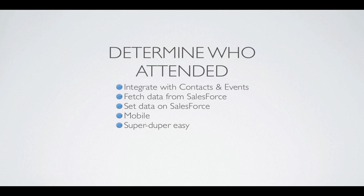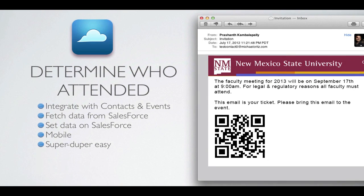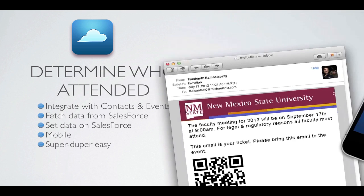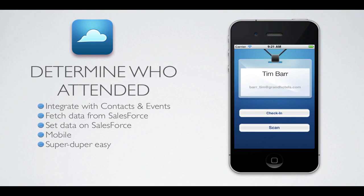So we used best practices from Salesforce.com, and we integrated that in the mobile app. From Salesforce, we created a presence model that connects to contacts and events. We also created a means to invite dozens, hundreds, thousands of people to an event and send them an invite with a QR code. And then we made an iOS app that can scan the QR code and check in users very fast.